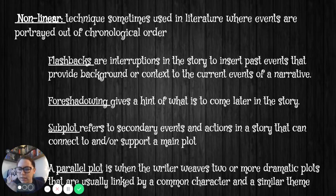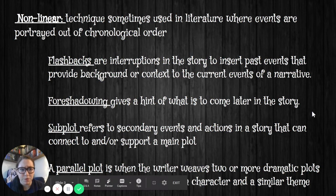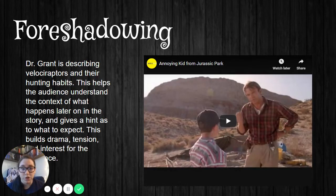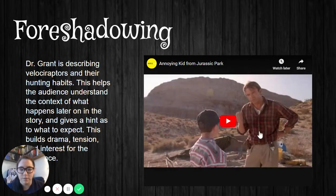Let's look at some examples of these plot devices. So the first one is foreshadowing — remember, that's the kind where it's giving you a hint as to what's to come. Let's watch this video clip and see if we can find the foreshadowing. This example is from Jurassic Park.